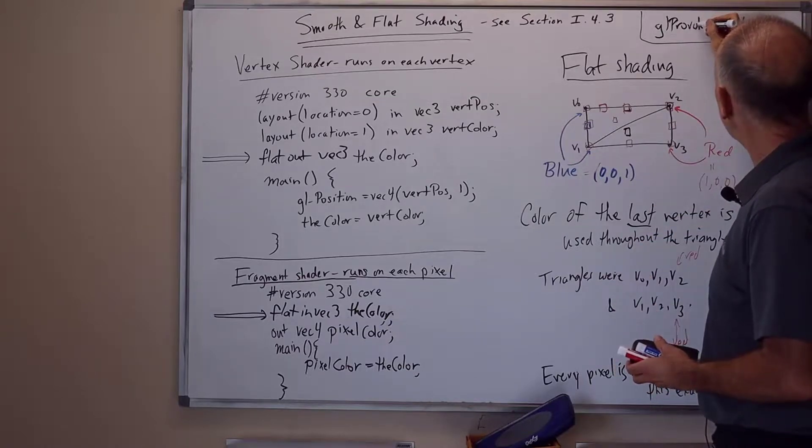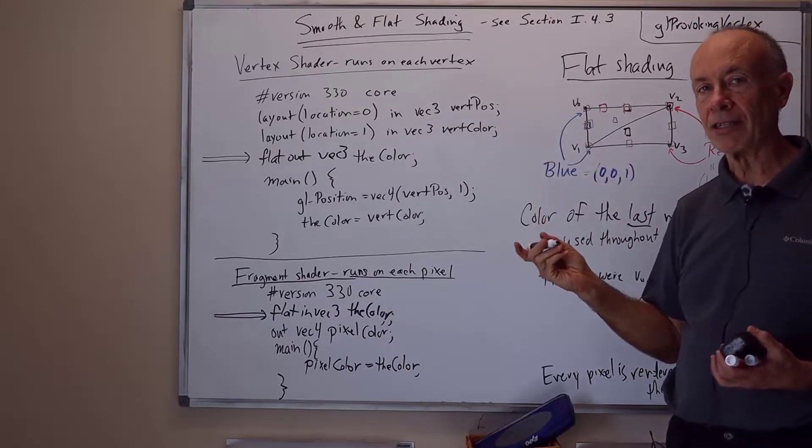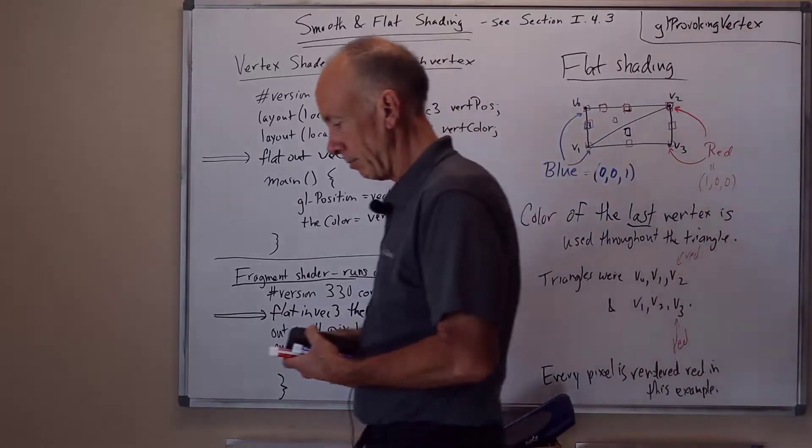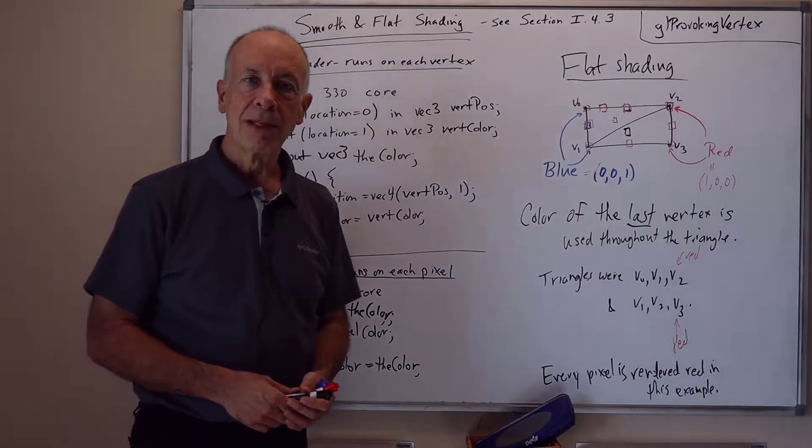That's P-R-O-V-O. This command can be used to change it to be the first vertex in each triangle that sets the color for the whole triangle. So that's the end of this presentation. Thank you.